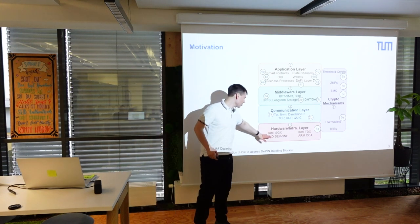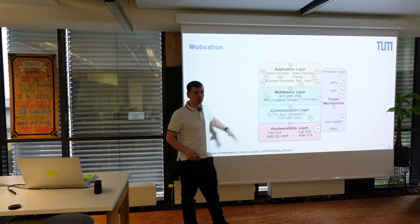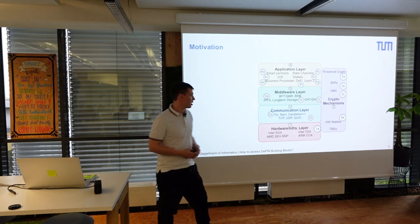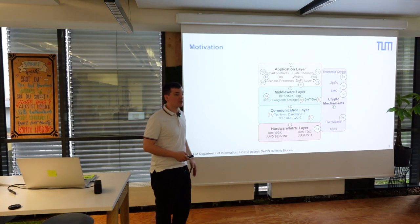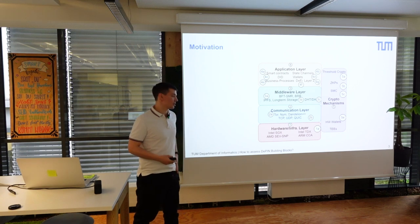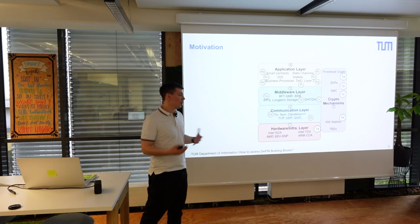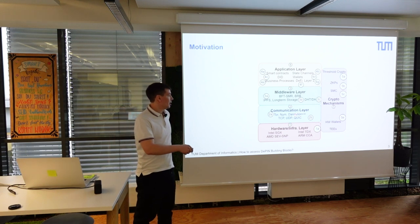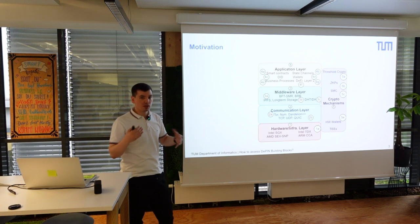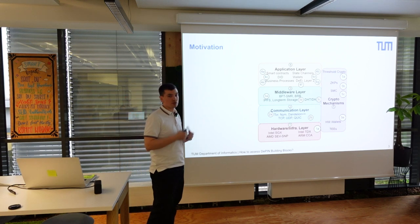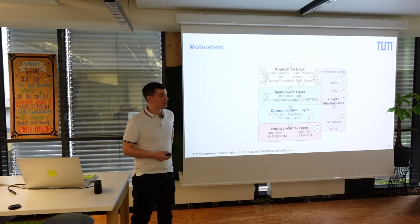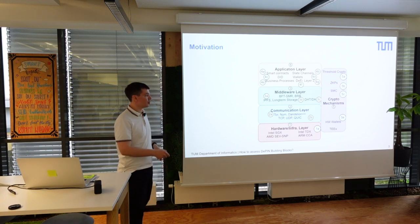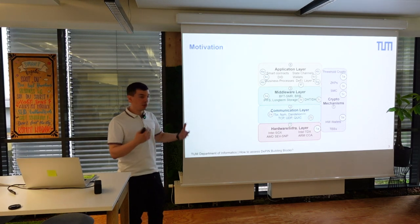Starting with the infrastructure layer, we build nowadays on top of robust and reliable infrastructure that by default already offers certain guarantees when it comes to performance, but also security — for example, in the presence of trusted execution environments. All peers, because we are talking about distributed networks, have to communicate with each other, either in a privacy-preserving fashion or relying on classical TCP/IP stack communication protocols like TCP, UDP, and QUIC.